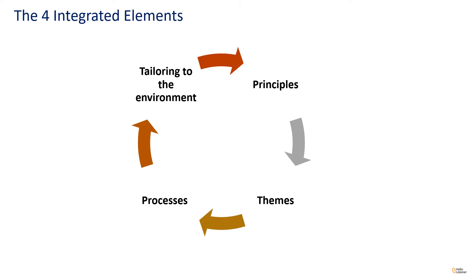The second element is Themes — seven specific areas of project management that are continuously and simultaneously monitored and updated throughout every project. The third element is Processes — seven steps carried out in chronological order starting with the beginning of the project and ending with its closure phase. The last integrated element is Tailoring — how we adapt to the environment, because PRINCE2 must be tailored to fit your project's type and size.